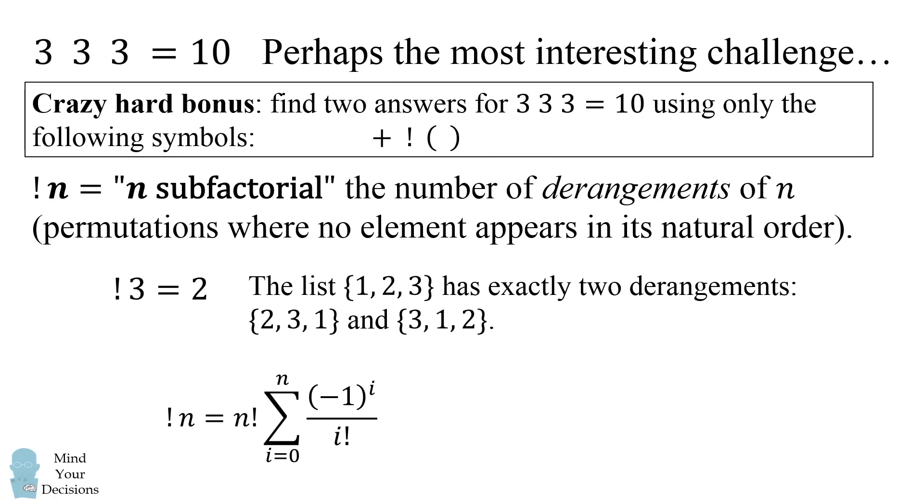Now just for general knowledge, there are formulas for sub factorial. n sub factorial is equal to the following formula. It's n factorial times its alternating sum. You can also calculate it as the following. n sub factorial is equal to the floor function of n factorial divided by e plus 1 half. This will be true for n greater than or equal to 1.